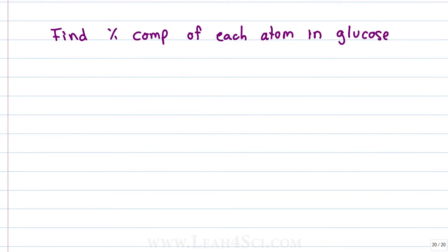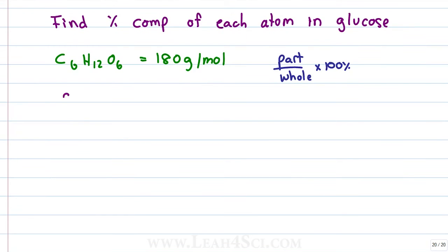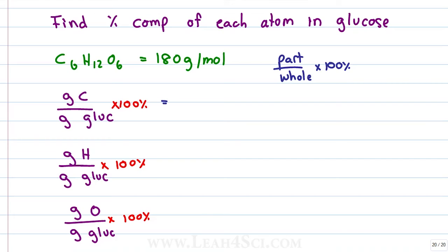Say you're asked to find the percent composition of each atom in glucose. We know that glucose is C6H12O6 and by now you should also know that that is equal to 180 grams per mole. To find the percent composition of each we'd have to set it up as part over whole times 100% where the part is the specific atom in question and the whole would be glucose. To find the percent of carbon we'd need the grams of carbon over the grams of glucose. For hydrogen we need the grams of hydrogen divided by the grams of glucose. For oxygen we need grams of oxygen divided by grams of glucose. Then multiply each one by 100% and this is where it gets tedious.